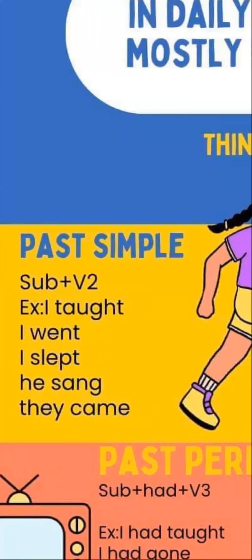Any guesses, anyone? Past simple — Saifu, Shihab, very good! Roni, very good! The answer is 'korethi lam' — meaning actions you did before, things that happened in the past.